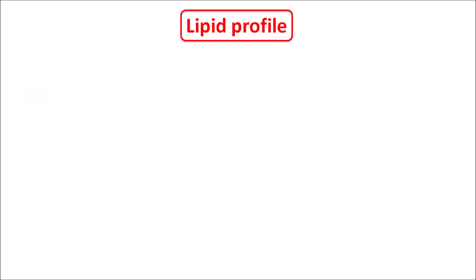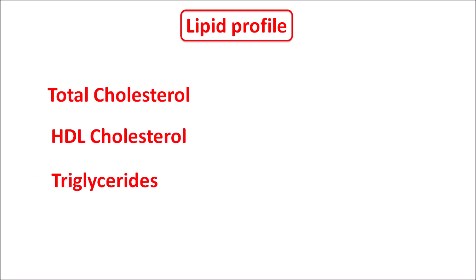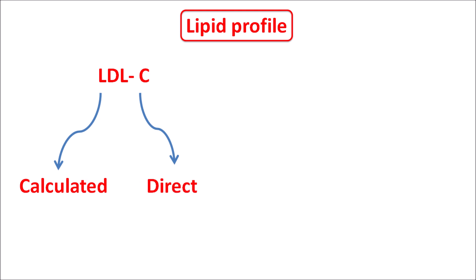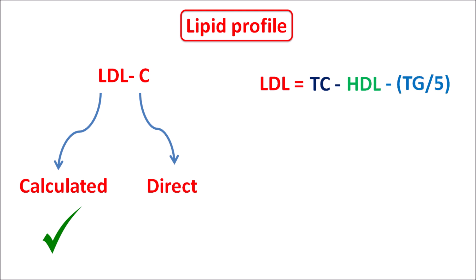Within the lipid panel, total cholesterol levels, HDL cholesterol levels, and serum triglyceride levels are going to be directly measured using chemical reagents. On the other hand, LDL cholesterol can be calculated, or it can also be directly measured using suitable reagents. But in most laboratories, LDL cholesterol levels are calculated. The levels of LDL cholesterol can be estimated from the total cholesterol levels — by subtracting HDL cholesterol and triglycerides divided by 5, because triglycerides share 20% of total cholesterol. When we subtract the HDL levels as well as 20% of triglyceride levels from the total cholesterol, we get the levels of LDL.